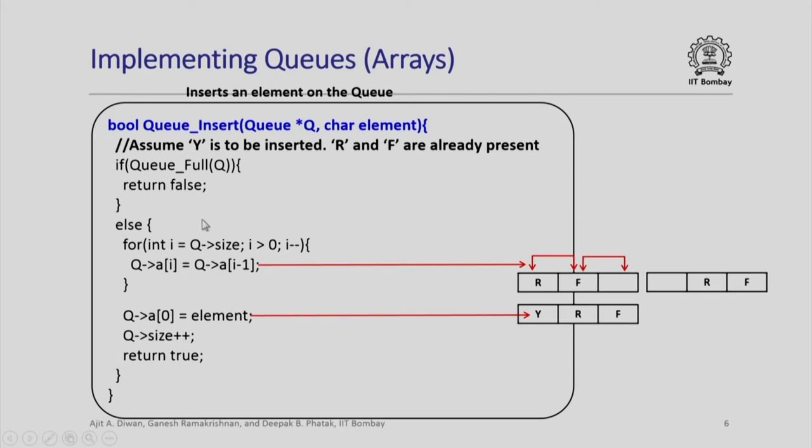So that F which was here we would like it to come here, R which was here we would like to come here. And this is what this iteration for int i equal to q->size to i, i minus minus will do. That means now F will come here, R will come here.